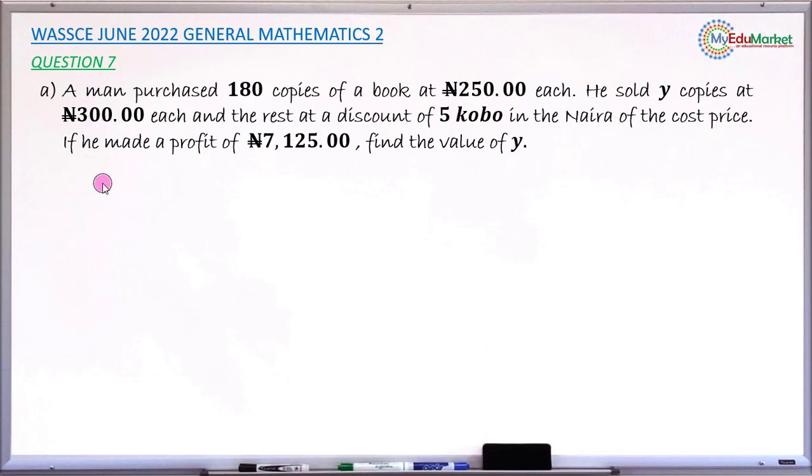So let's attempt to answer this question together. To find the Y, what we do first is to get this profit. To find the profit, you need to know the total cost and you need to know the total sales. So let me start with the total cost.